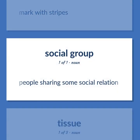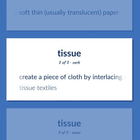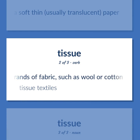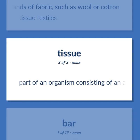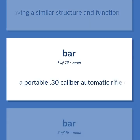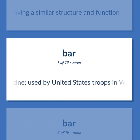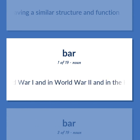People sharing some social relation. A soft thin, usually translucent, paper. Create a piece of cloth by interlacing strands of fabric, such as wool or cotton. Tissue textiles. Part of an organism consisting of an aggregate of cells having a similar structure and function. A portable .30 caliber automatic rifle operated by gas pressure and fed by cartridges from a magazine, used by United States troops in World War I, World War II, and the Korean War.